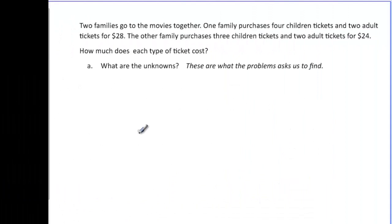Two families go to the movie together. One family purchases four children's tickets and two adult tickets. The other family purchases three children's tickets and two adult tickets for $24. How much does each type of ticket cost? Well, first we have to figure out what our unknowns are, and they're asking us for type of ticket.